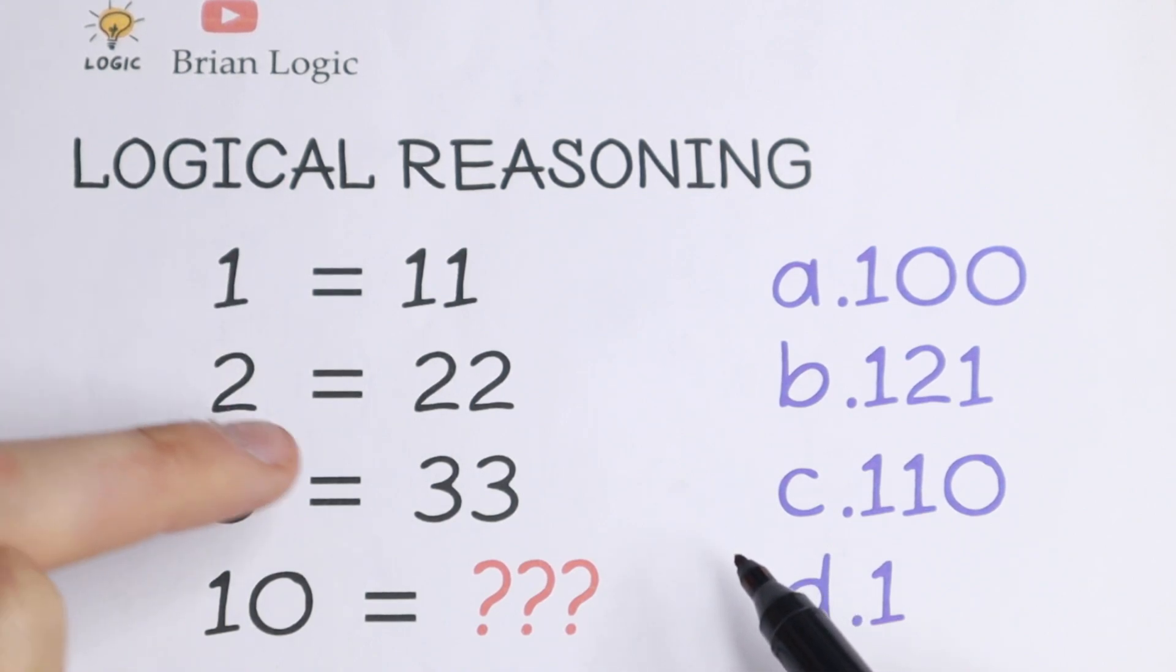We have four rows: 1 equals 11, 2 equals 22, and 3 equals 33, and we need to find 10.